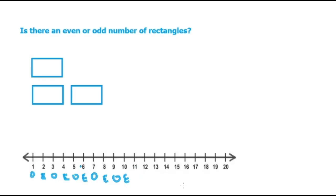You'll notice that the ones that are even are the ones that you can skip count by two. So, two, four, six, eight, ten, twelve, and so on.